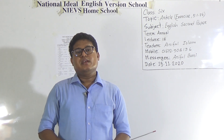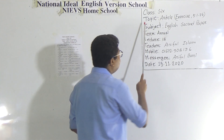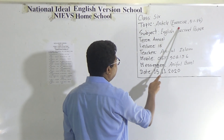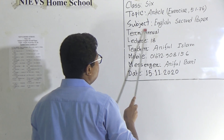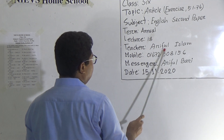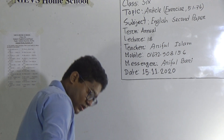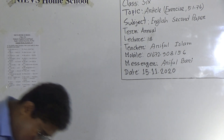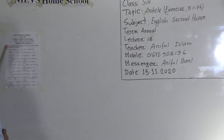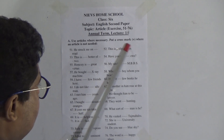Today's topic is Article Exercise 51 to 76. Subject: English Second Paper. This is annual term lecture 18. Teacher: Ariful Islam. Today's class: use articles where necessary, and put a cross mark where an article is not needed.